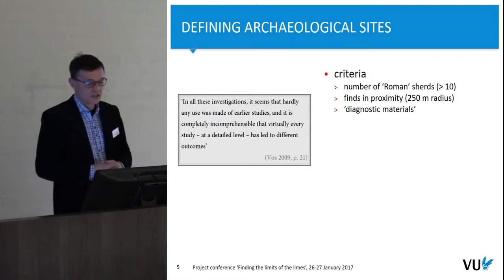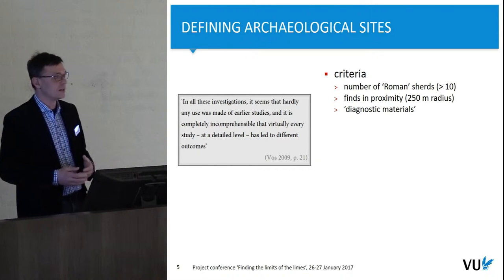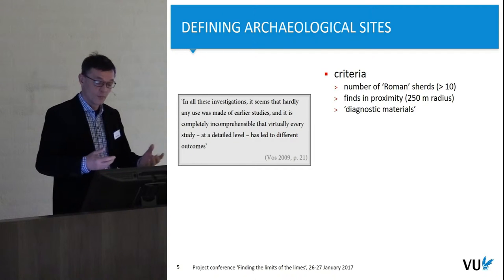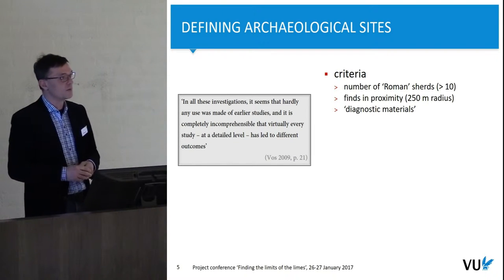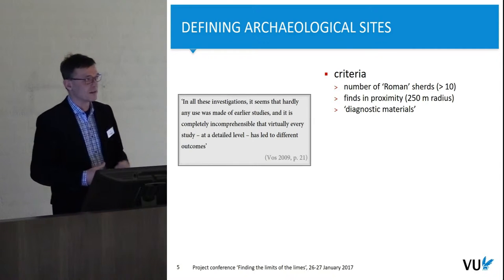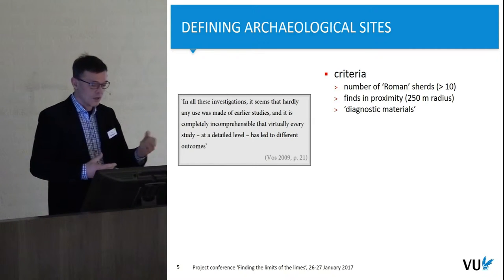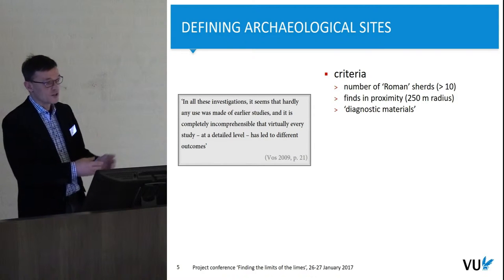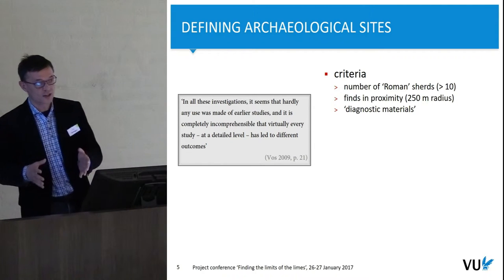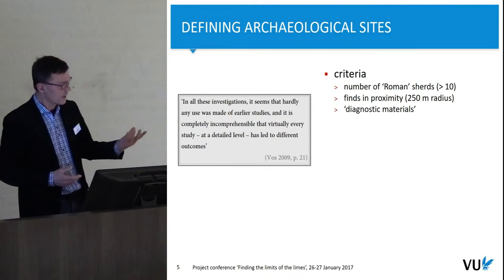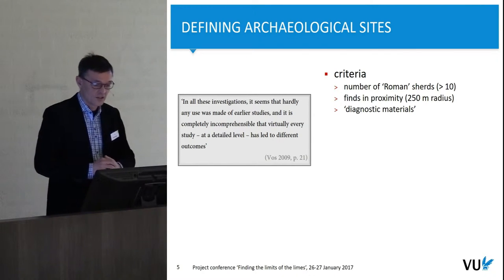The basic criterion applied at the time was that you needed to have at least a certain number of sherds dated Roman — 10 or more — found in close proximity. Sometimes you would also have clear diagnostic materials, specific signs in finds, specific soil layers that would allow you to say people actually lived here.